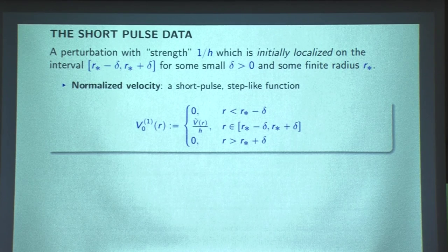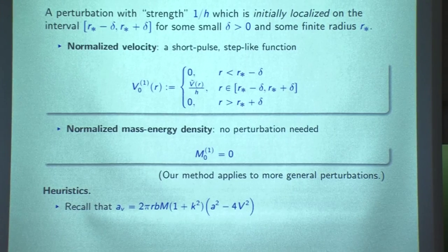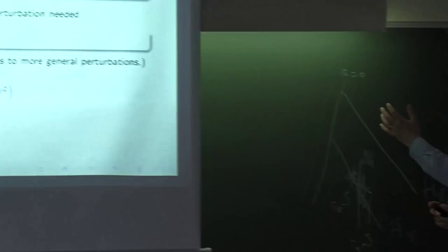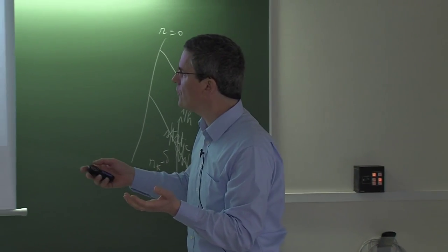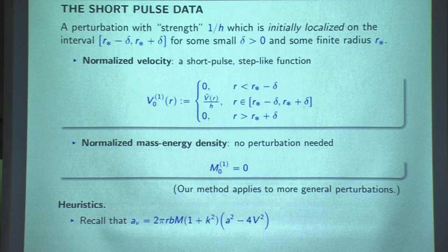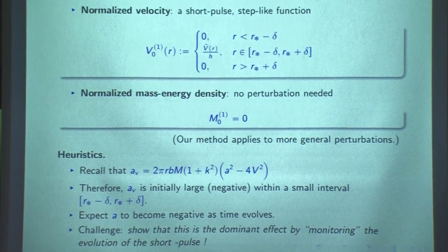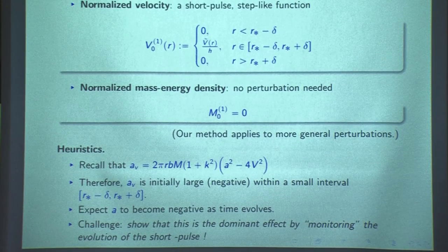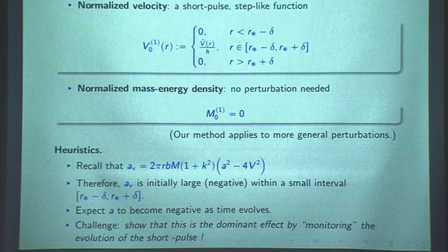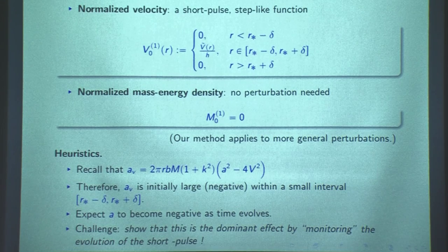This is quite reasonable because looking at one of the Einstein equations, we have an equation for a sub v of the form a squared minus 4v squared. So if you have a large V, this a sub v will be negative, and therefore you expect a to decrease and to become negative as time evolves. That seems to be the right direction. But it's not so easy, because you need to show that this is a dominant effect — all these equations are coupled, not only that equation, but the whole system where everything is coupled. You also need to monitor the evolution of the short pulse.